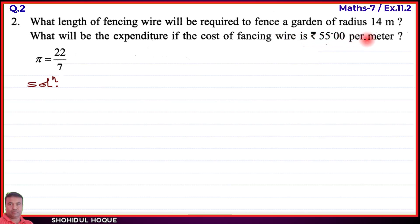Question number 2: What length of fencing wire will be required to fence a garden of radius 14 meters? What will be the expenditure if the cost of fencing wire is rupees 55 per meter? To fence a circular garden, we need to find the circumference. The radius is given as 14 meters, which is half of the diameter.